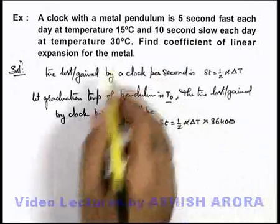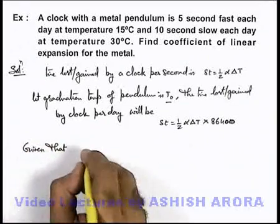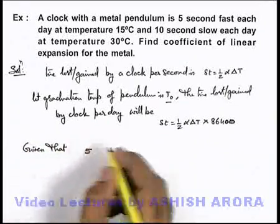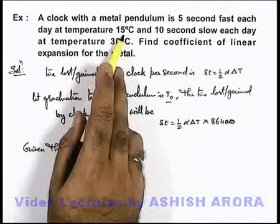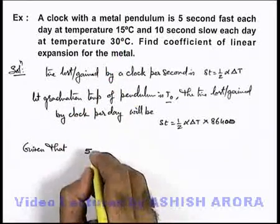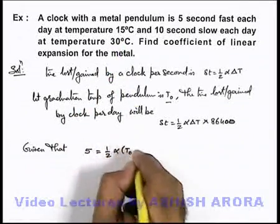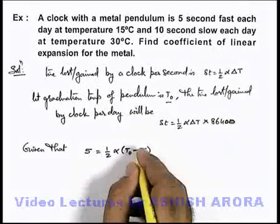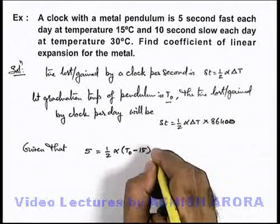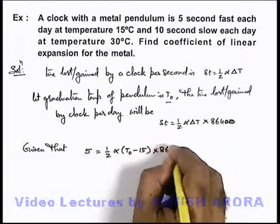So, as per the given conditions, we can write, given that on a day the clock is 5 seconds fast when temperature is 15 degree centigrade. So we can write in this situation 5 is equal to half alpha times T₀ minus 15, because certainly if it is fast then the temperature must be lower, multiplied by 86400.